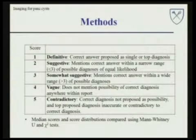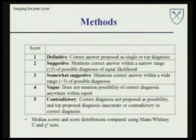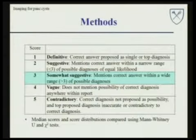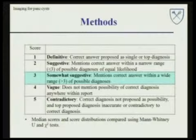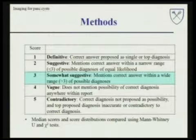A score of one was considered a definitive study in which the correct answer was proposed as a single or top diagnosis. A score of two was considered suggestive in which mention is made of the correct answer within a narrow range of possible diagnoses of equal likelihood — less than or equal to three diagnoses. For purposes of our analysis, scores of one or two were considered helpful preoperative studies. A score of three was assigned for studies that were considered somewhat suggestive — they made mention of the correct answer within a wide range of possible diagnoses greater than three. In the not infrequent scenario where the radiologic report read something along the lines of pancreatic cystic lesion, pseudocyst versus neoplasm, a score of three was assigned.